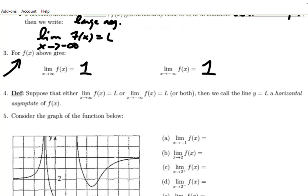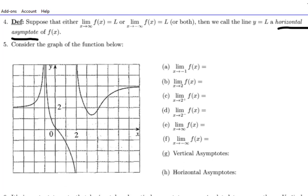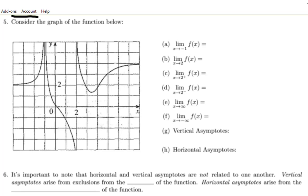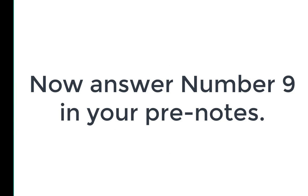So if, as x gets large to the right, we approach L, or if, as x gets large to the left, we approach L, or both, then we say that the line y equals L is called a horizontal asymptote. I'd like you to do number five. You've got all the tools you need for number five.